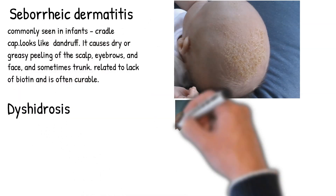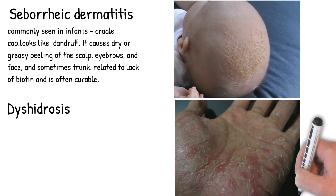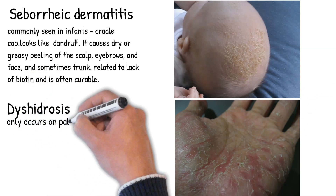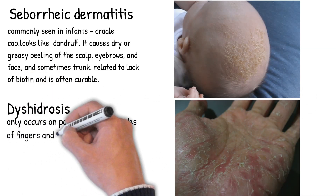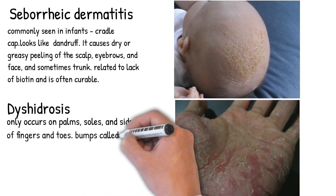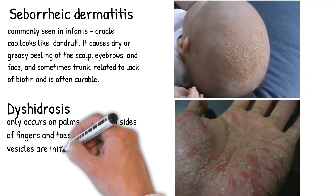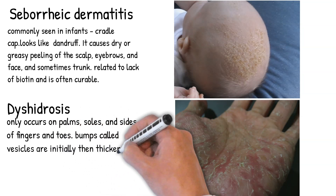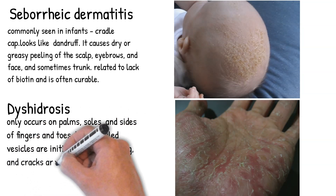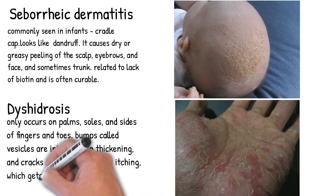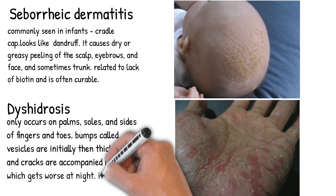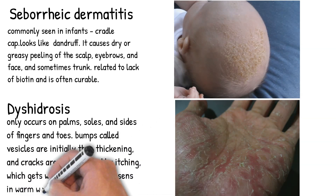Other less common types include dyshidrosis, which only occurs on the palms, soles, and sides of fingers and toes. Bumps called vesicles appear initially, then thickening and cracks occur, accompanied by itching which gets worse at night. It also worsens in warm weather.